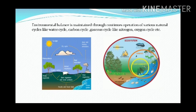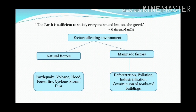Environmental balance is also maintained due to various food chains of an ecosystem. Various factors affect the environment — both natural and artificial or man-made factors. Among the natural factors are sudden changes in weather and different types of natural disasters such as earthquakes, volcanoes, and floods. Man-made factors include deforestation, pollution, industrialization, and construction of buildings and roads. At present, many environmental problems have arisen due to various components or factors on the Earth.